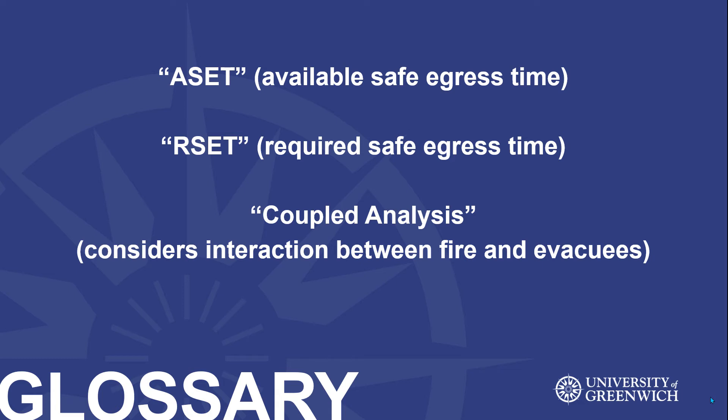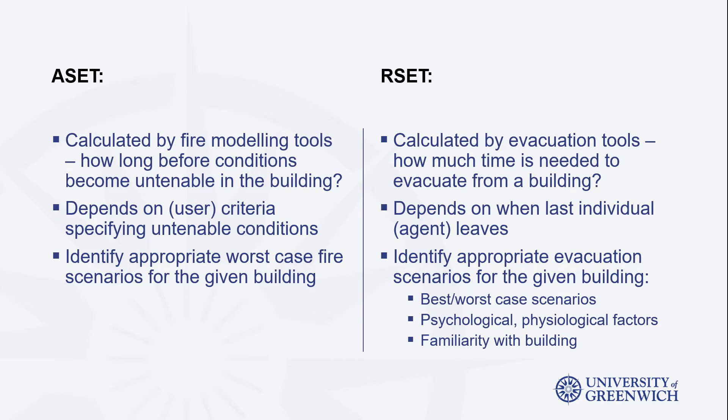The concept of the available safe egress time, the required safe egress time, and a coupled fire safety analysis is briefly presented. In a traditional fire safety analysis for a structure, the engineer would typically conduct two types of analysis. The first would relate to a fire hazard scenario for the structure in question, and the second to the structure's evacuation performance.